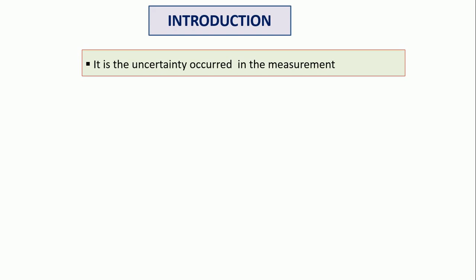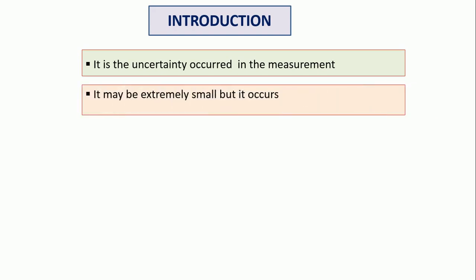This error is known as uncertainty which occurs in the measurement. Sometimes we cannot understand why this error occurred, but it may be small — it occurs. It may be extremely small, but it occurs. For example, in a titration where 10 ml reading is expected, the reading may be 9.8 or 9.9 — a very small difference, but it occurs most of the time.